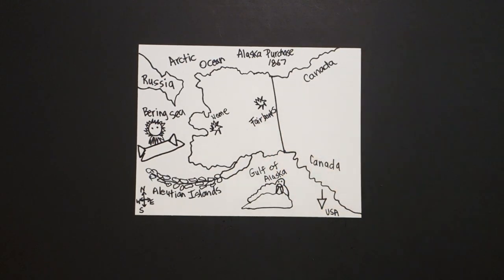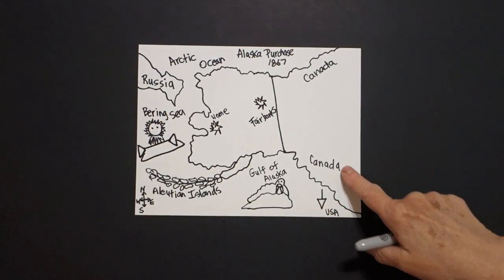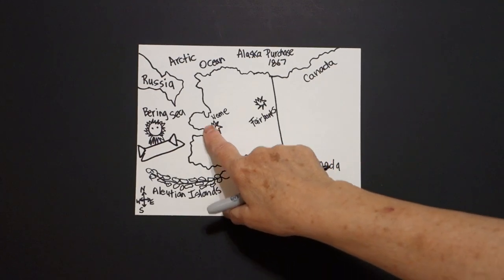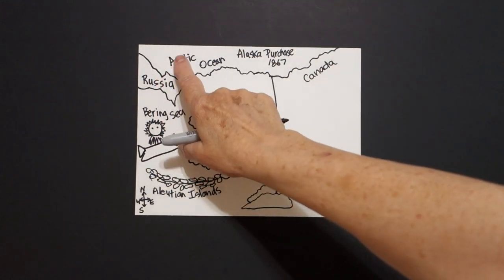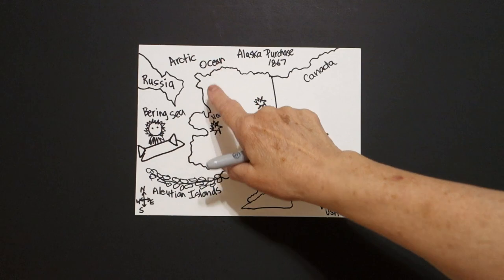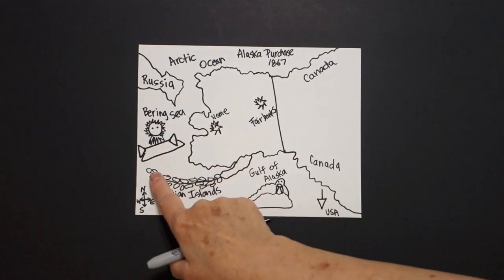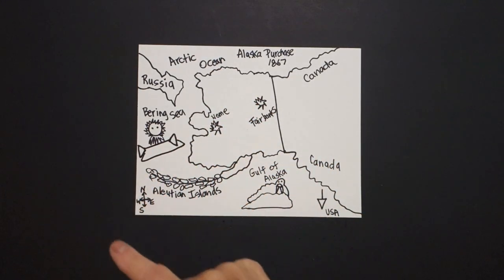I'll tell you the story of all of this in just a minute. Let me make sure we've got the USA going down, Canada up and over. This is Alaska, Russia, Arctic Ocean, Aleut, Aleutian Islands, Compass Rose, and a walrus.